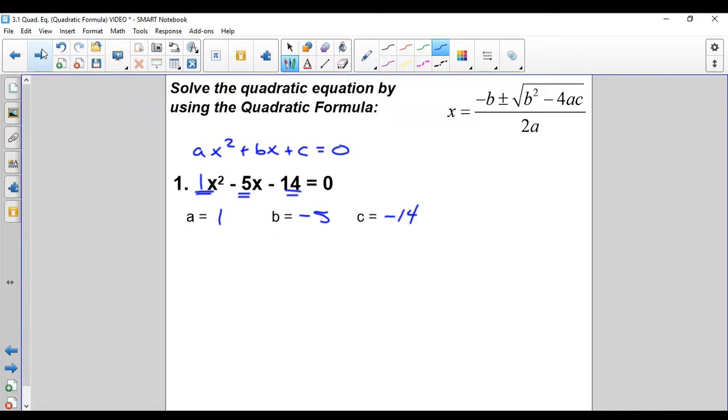Now, going through this, we just plug everything in. You just got to be careful with your signs. That's really the big deal here. So when we plug this in, it's x equals opposite of your b, so 5 plus or minus b squared, which is 25. You square any number, it's positive, so don't worry about that. Minus 4 times 1 times negative 14 for your c, all over 2 times 1 for your a. I like to show this step with everything plugged in.